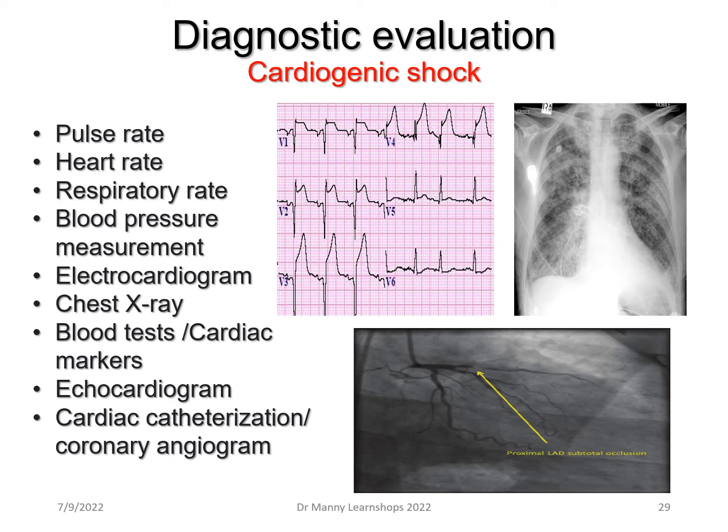What about diagnostic evaluation? The diagnostic evaluation for cardiogenic shock includes pulse rate, heart rate, respiratory rate, blood pressure measurement, electrocardiogram, chest X-ray, blood tests such as cardiac markers — troponin, CK-MB — echocardiogram, and in other situations possibly cardiac catheterization and a coronary angiogram to identify where the lesions in his coronary circulation are.